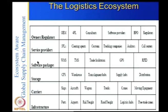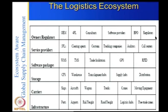Service providers include 3PL third-party logistics players, clearing agents, customs authorities, trucking companies, auditors, and call centers. At the top are OEMs, 4PL consultants, software providers, and regulators. In total there are six layers of people — infrastructure providing trucks and storage, software, services, and regulators. Some layers are asset-intensive while others are service-based.